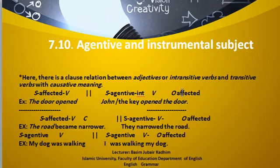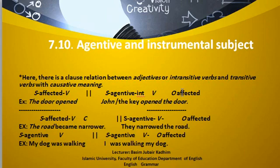There is a clause relation between adjectives or intransitive verbs and transitive verbs with causative meaning. The relationship can be between the subject, which is affected, and the verb. For example, 'the door opened.' Here, the subject is affected, while the subject whose role is agentive occurs with a transitive verb.